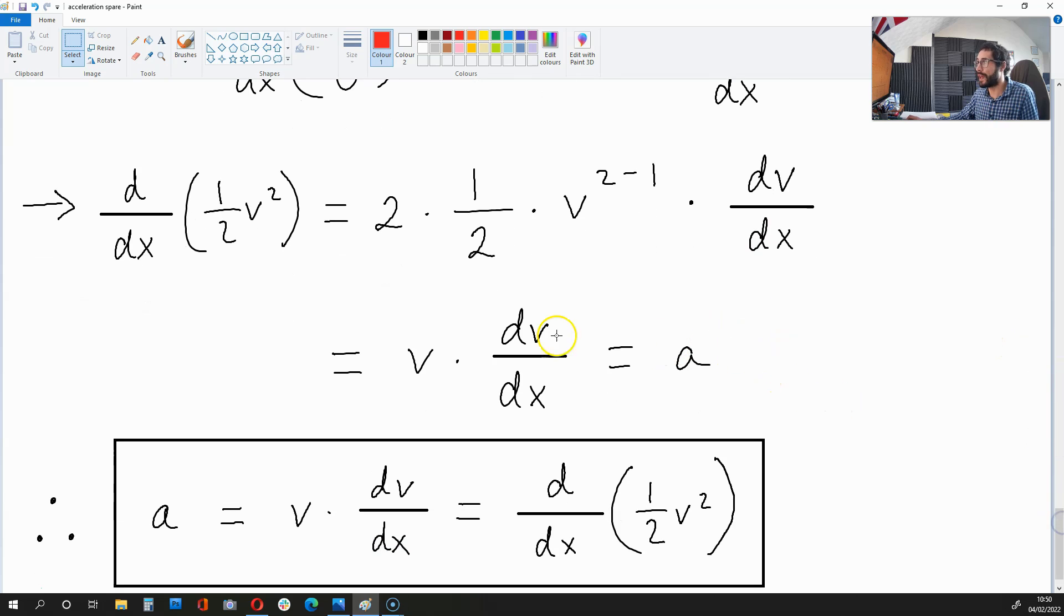And what this leaves us with is v times dv over dx, but we already know that this is equal to a.